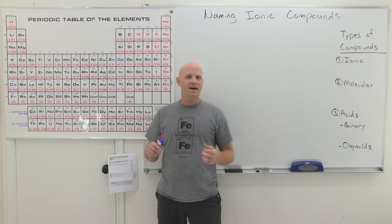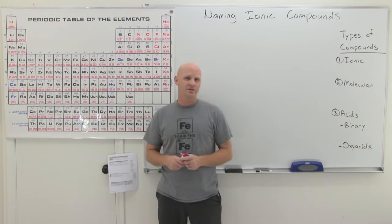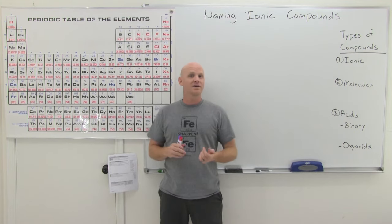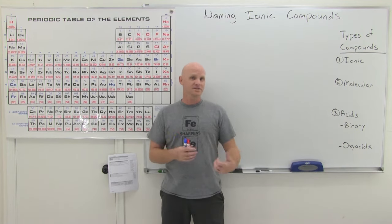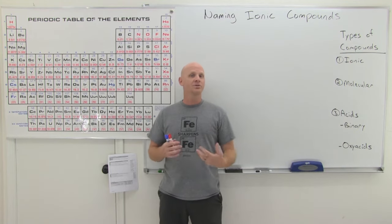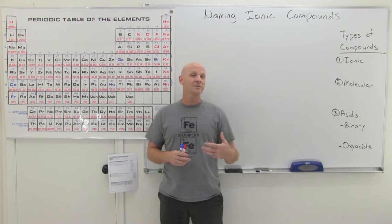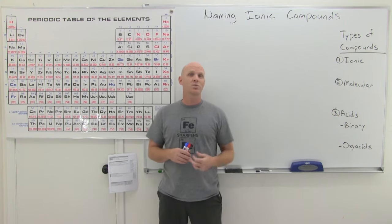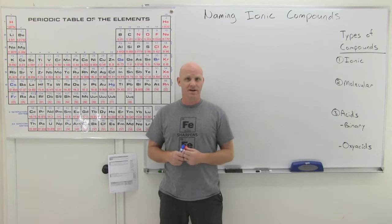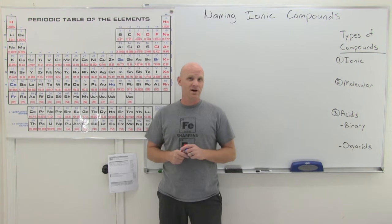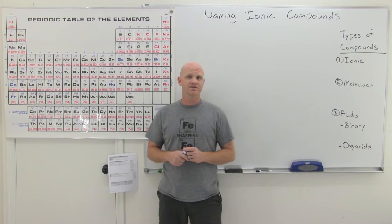Naming ionic compounds, also known as the nomenclature of ionic compounds, is going to be the topic of this lesson. The next couple of lessons are also going to be regarding nomenclature — the next one on naming molecular compounds, and the one after that on naming acids. Before we get there, we need to talk about how we identify which type of compound we have, so that we know which naming system is appropriate.